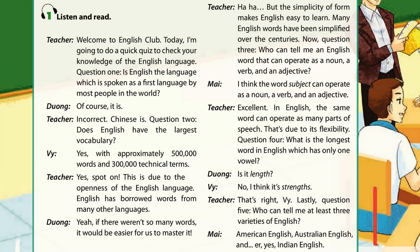Question 3: Who can tell me an English word that can operate as a noun, a verb and an adjective? I think the word 'subject' can operate as noun, verb and adjective. Excellent! In English, the same words can operate as many parts of speech. That's due to its flexibility.